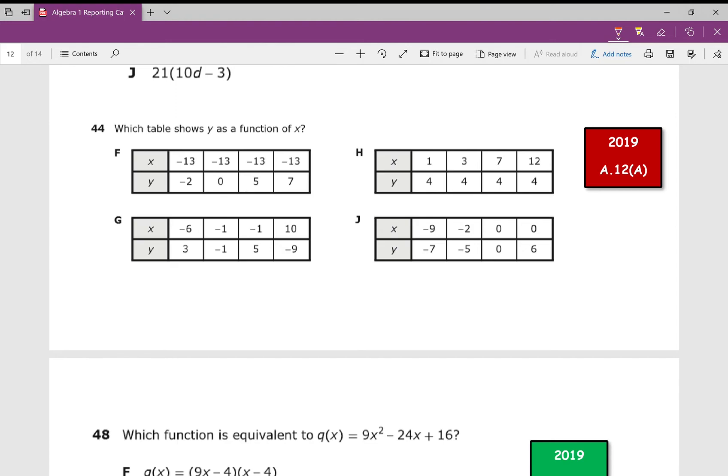Number 44, which table shows y as a function of x? Which one's a function? In a function, x values can't repeat. So which one is a function? Pay attention. Is it asking you which one is a function, or which one is not a function? It's asking for which one is a function. H is the only one that does not show any repeating x values. Obviously, they all repeat in F. I've got these negative ones that repeat in G, and I've got some zeros that repeat in J.